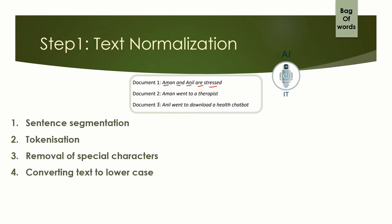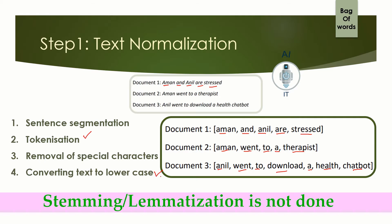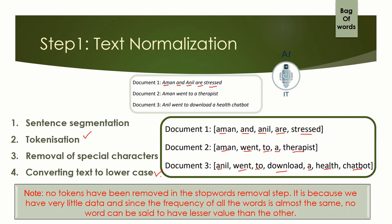The end result of text normalization would be to take individual words and put them together. For the first document: Aman and Anil are stressed. For the second document: Aman went to a therapist. The third document: Anil went to download a health chatbot. We have done tokenization and converted the text to lowercase. This example from the textbook notes that no tokens have been removed in the stop words removal step because we have very little data — just three sentences — so we retain all the words as is.